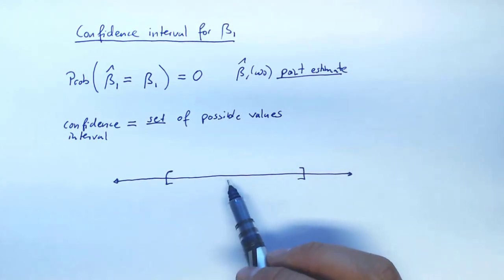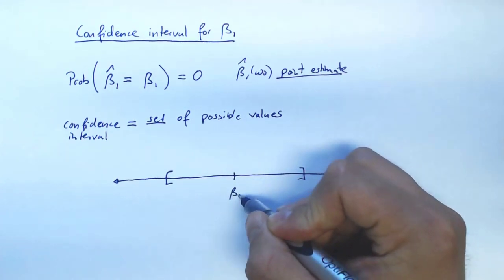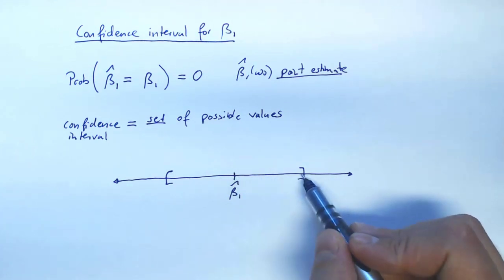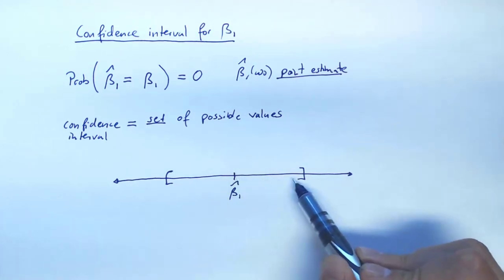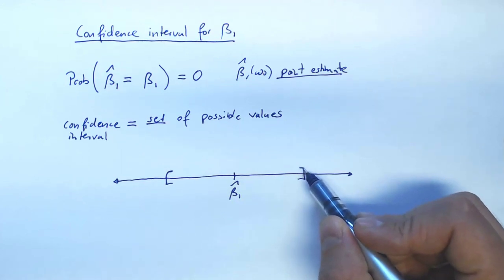And what we're actually going to do, the beta 1 hat is our best guess in a way. So we put that in the middle, but we put some padding to the left and to the right, just to account for uncertainty due to our sampling error.